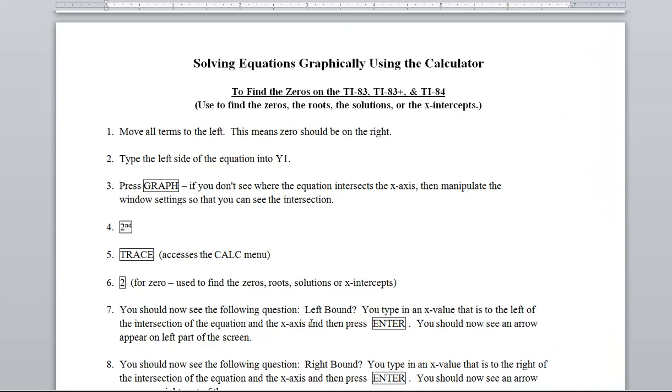You should now see the following question: left bound. We've seen this before. We type in an x value that's to the left of what we wanted. In this case, to the left of the intersection of the equation and the x-axis. Then press enter. You should now see an arrow appear on the left side part of the screen.